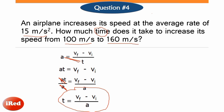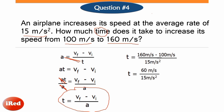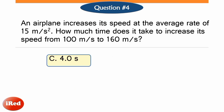Substituting: time = (160 m/s − 100 m/s) / 15 m/s² = 60 m/s ÷ 15 m/s² = 4 seconds. Canceling units gives us the final answer of 4 seconds. Thus, the answer for question number 4 is letter C, 4 seconds.